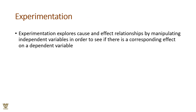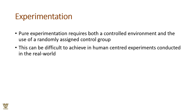Experimentation explores the causes and effects of any event or relationship by manipulating independent variables in order to see if there are corresponding effects on dependent variables. Pure experimentation requires both controlled environments and the use of randomly assigned control groups, which can be difficult to achieve in human-centered experiments conducted in real time in the real world.